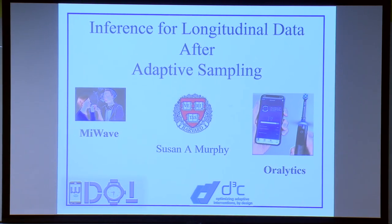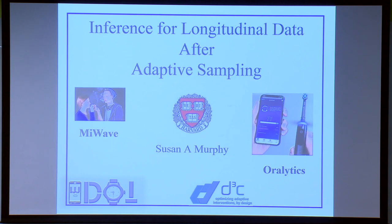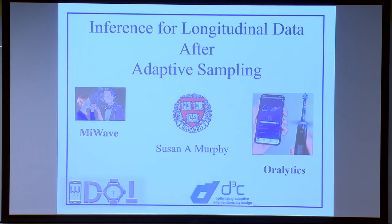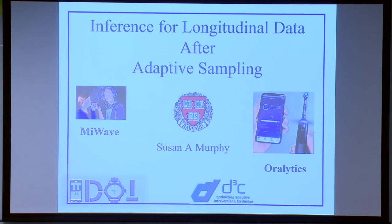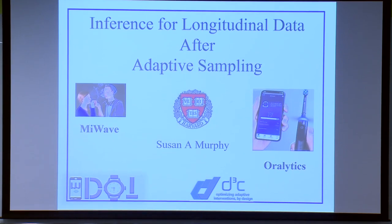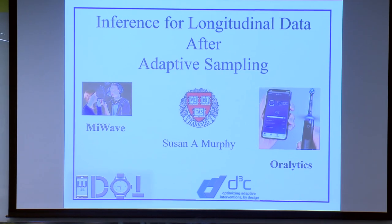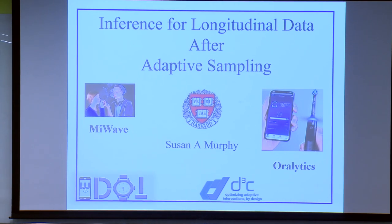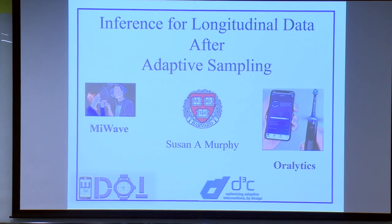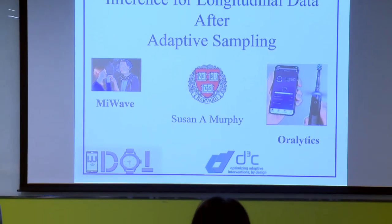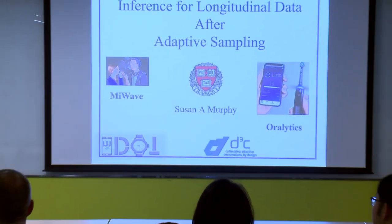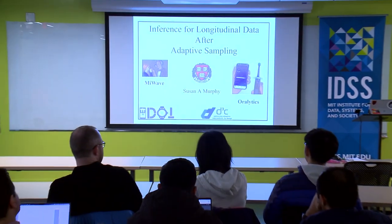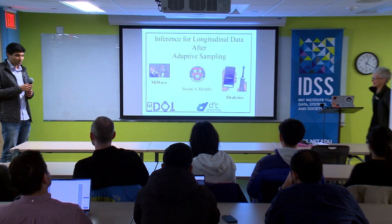Susan Murphy, who is an eminent statistician at Harvard, has all kinds of awards and prizes. She was a 2013 MacArthur Fellow for her work on using experimental design to inform sequential decision-making. We're thrilled to have her as a part of our IDSS Distinguished Lecture Series, so please join me in welcoming her.